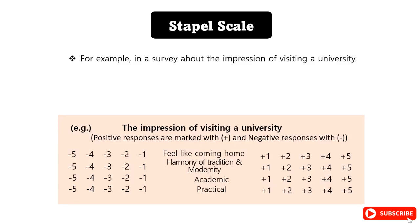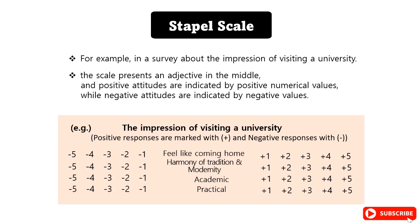For example, in a survey about the impression of visiting a university, the scale presents an adjective in the middle, and positive attitudes are indicated by positive numerical values, while negative attitudes are indicated by negative values. As shown in the figure, the Staple Scale presents adjectives such as feeling at home, harmony of tradition and modernity, academic, and practical in the middle of the answer sheet, and respondents indicate their opinion.